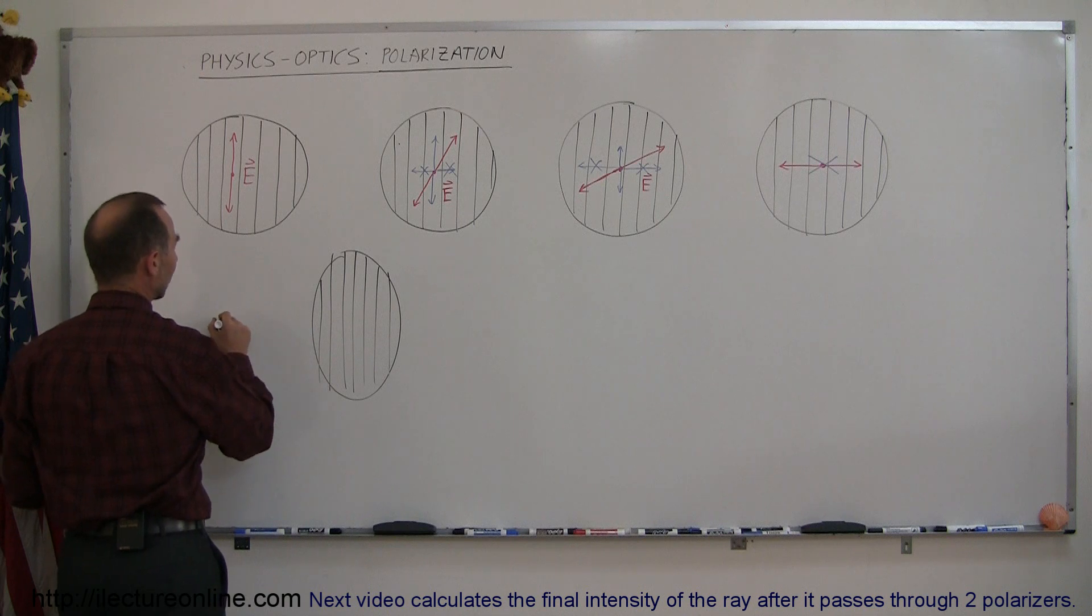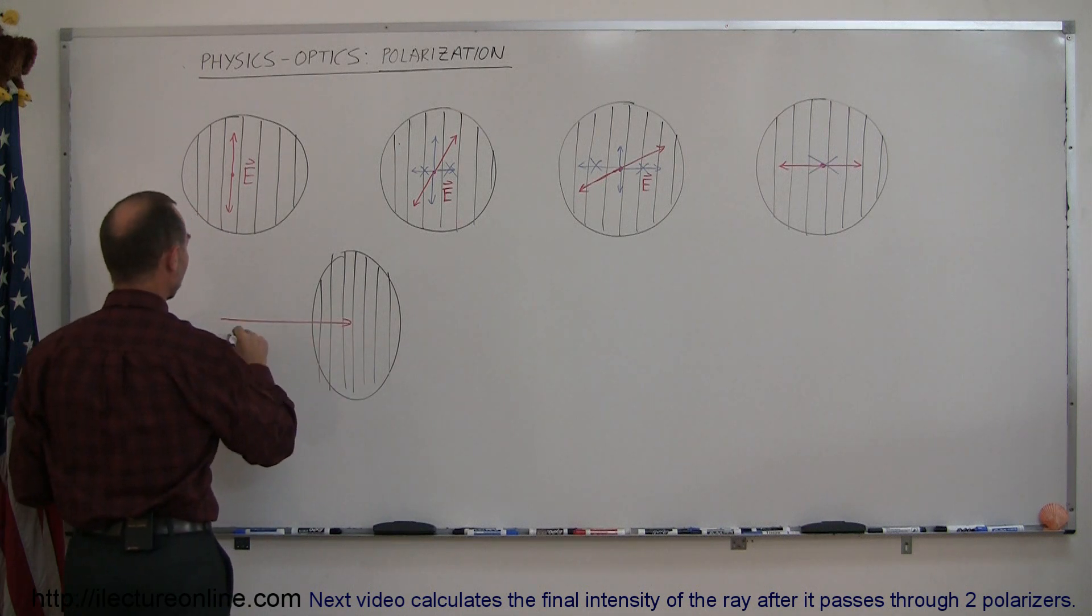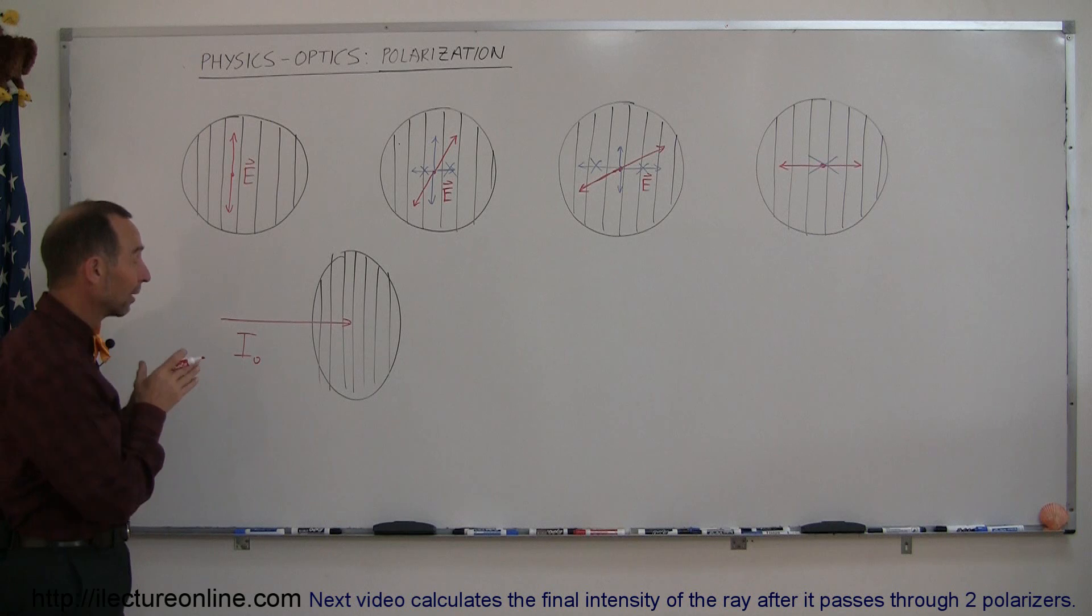and let me use red, incident upon the polarizer. And let's say that the intensity of the beam of light that is directed towards the polarizer is I sub-zero,